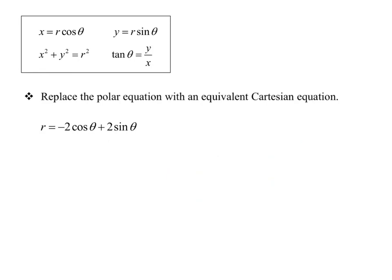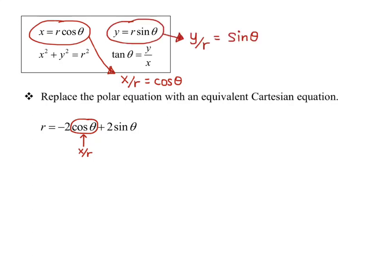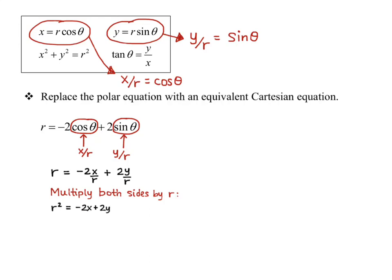Here's the last example where we want to replace the polar equation with an equivalent Cartesian equation. This one is a little more complicated because we can't manipulate it to get a direct identity to use. What we want to do is figure out that cosine theta can be written as x over r, and sine theta can be written as y over r. We'll use those two replacements to get r equals negative two x over r plus two y over r, then multiply both sides by r to get r squared equals negative two x plus two y.